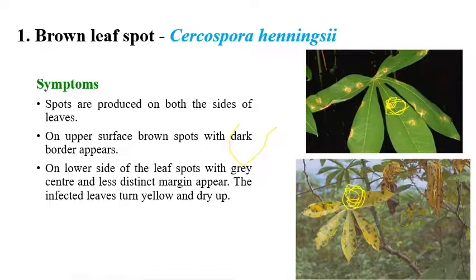On the upper surface, brown spots with a dark border are visible, while on the lower surface, brown spots with a gray center can be clearly observed. In later stages, infected plants slowly start to turn yellow and eventually dry up.